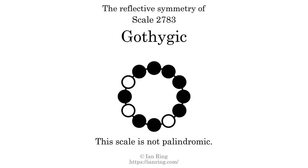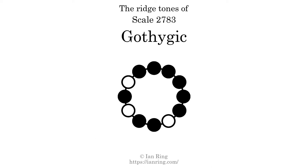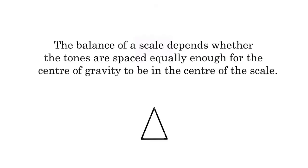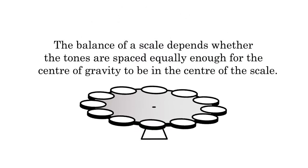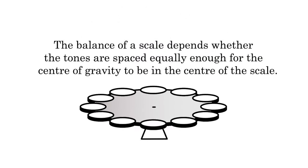This scale has no reflective symmetry. This scale has a different pattern of intervals ascending and descending, so it is not palindromic. This scale has no ridge tones. The balance of a scale depends on whether the tones are spaced equally enough for the center of gravity to be in the center of the scale.